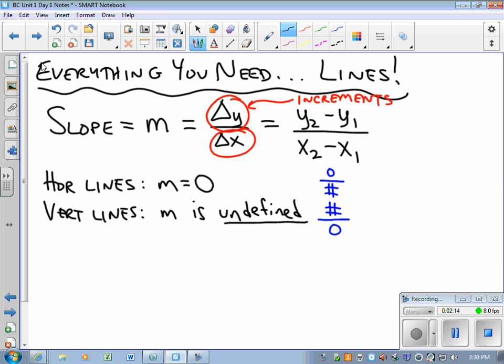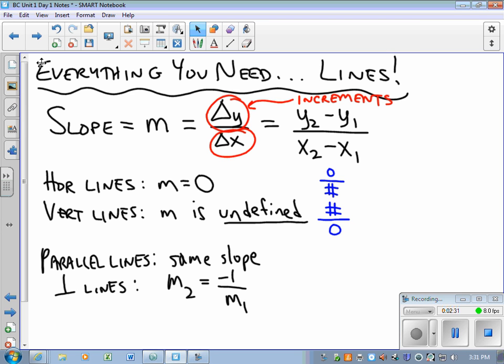If two lines are parallel, they have the same slope. If two lines are perpendicular, then the slope of one is the opposite reciprocal of the slope of the other. Sometimes it's easier to remember that the product of the slopes is negative one.